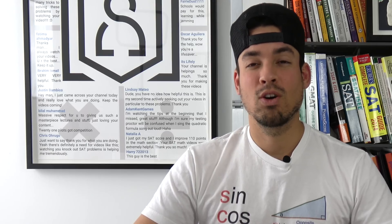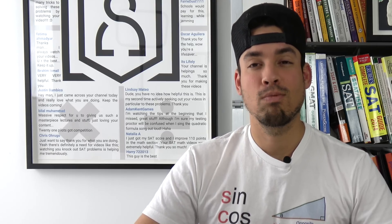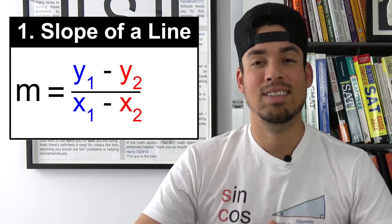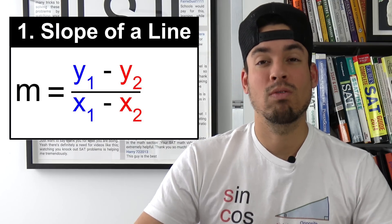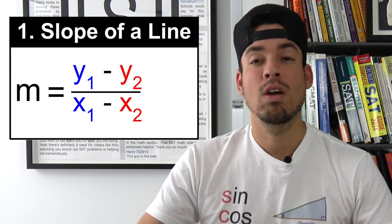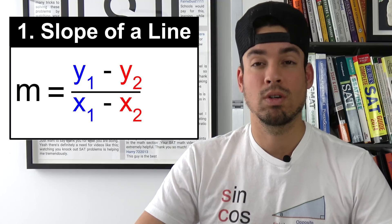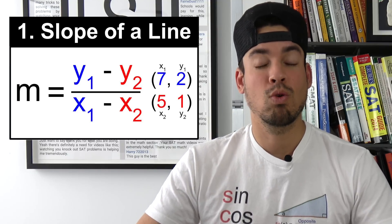The first formula that you've got to know is how to calculate slope of a line. So that's why we got this nice y1 minus y2 over x1 minus x2. Those are placeholders for values of two coordinates. So all you got to do is pick those coordinates.